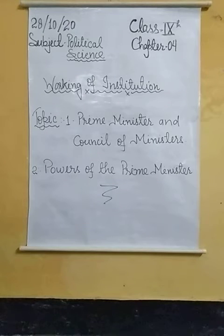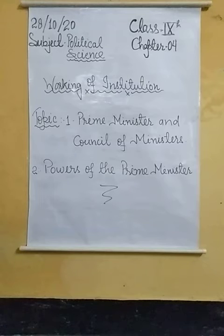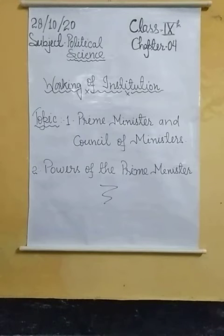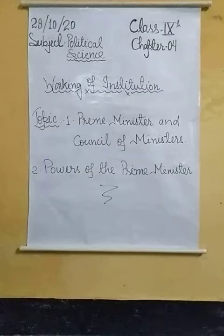Today's topic is the continuation of chapter four, working of institutions, from political science. I will discuss two topics: number one, prime minister and council of ministers, and number two, powers of the prime minister.